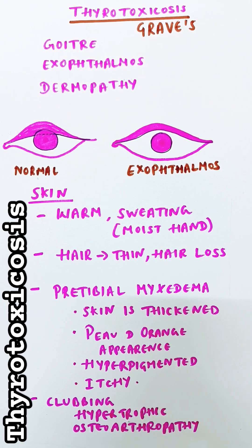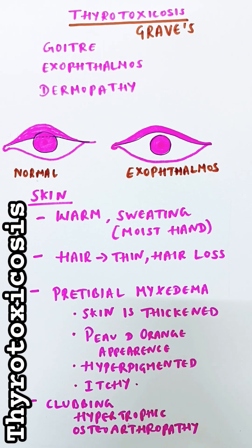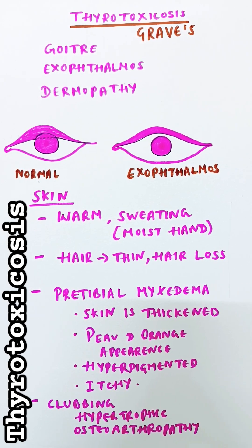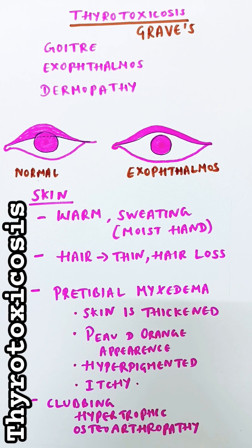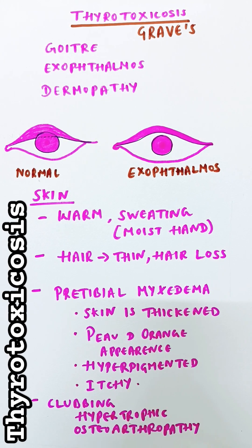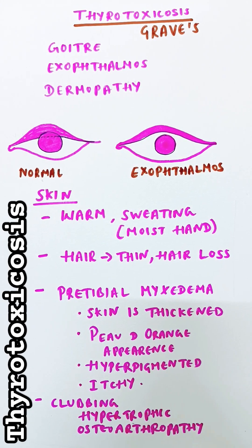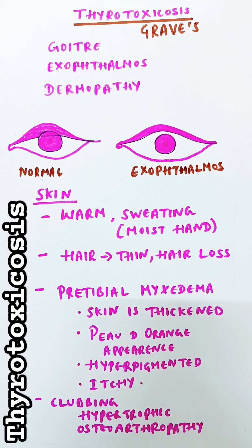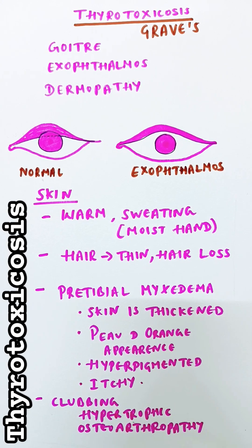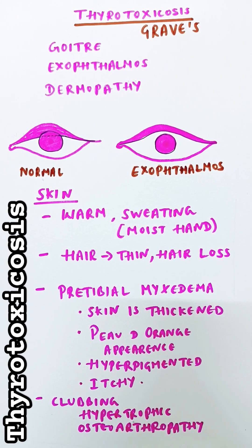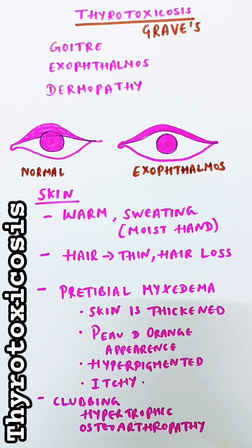Goiter meaning enlargement of the thyroid gland. Exophthalmos — you can see here that in a normal eye the patient's upper part of the cornea will be covered by the eyelid. But in exophthalmos, since the eyeball is protruding forward, the eyelid will not cover the cornea, so the sclera will be visible both above and below the cornea clearly.